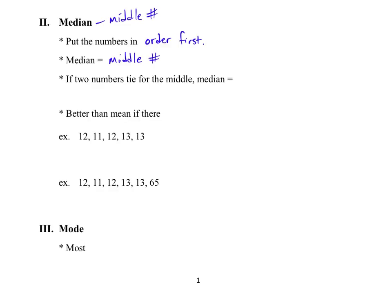So median is going to be the middle number. The trick that math teachers throw at you is they give you numbers but they're not in order. So the key is you need to put the numbers in order first. And then median is the middle number. And if two numbers tie for the middle, the median is the average of those two.